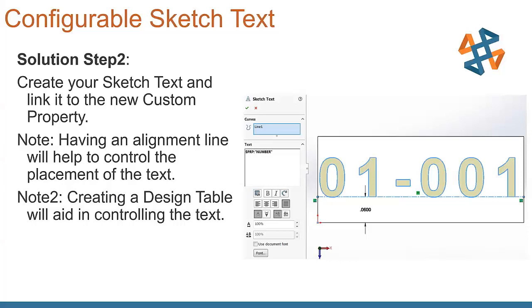We go in, we create your sketch text and we link it to the new custom property that we have out there. You can see the syntax out there of dollar sign, PRP, and then number. Two things that I want to remind people of in here: having an alignment line will help control the placement of the text. If we always want this to be centered on a line or you always want a certain distance in from the edge, that alignment line will help us out with that.